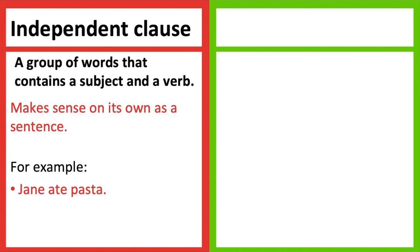Another example is Sam went to the park. The subject in this sentence is Sam and the verb is went. As we can see from these examples, they make sense on their own and they convey a complete thought.